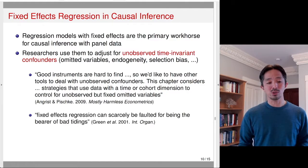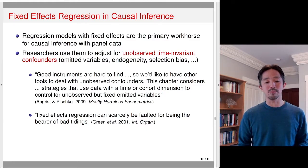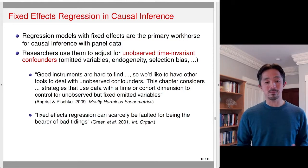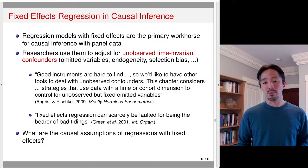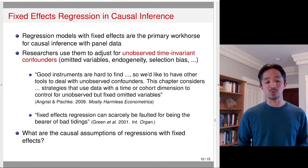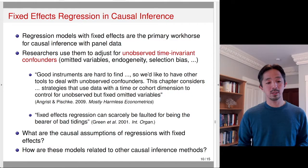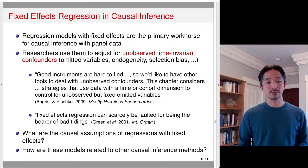In political science also, fixed effects regression can scarcely be thought of without being a bearer of best practices. There's a strong belief in the effectiveness of fixed effects in the social science literature. So the question we might ask is: what are the causal assumptions of regressions with fixed effects, and how are these models related to other causal inference methods? We'll explore this question throughout this module.